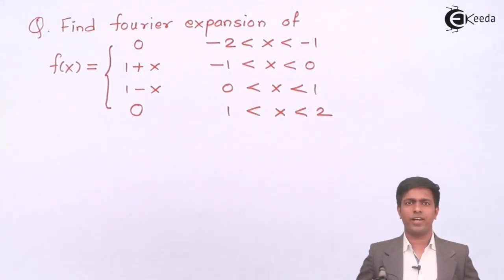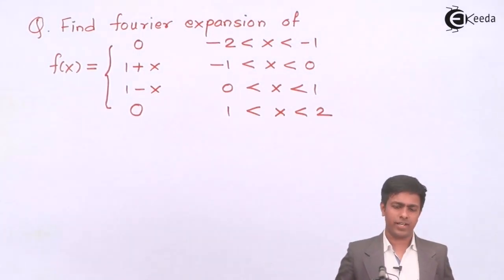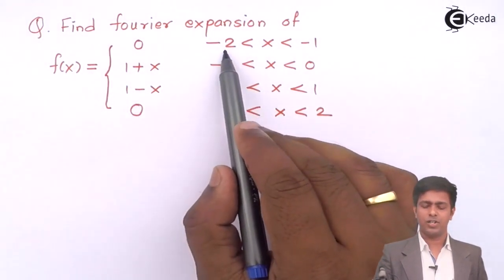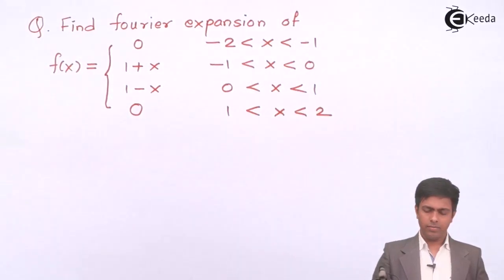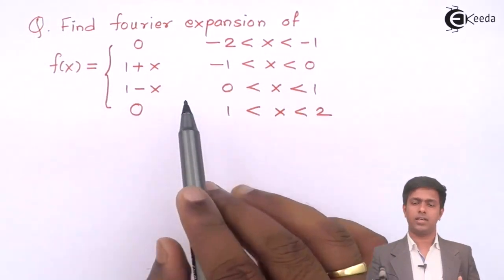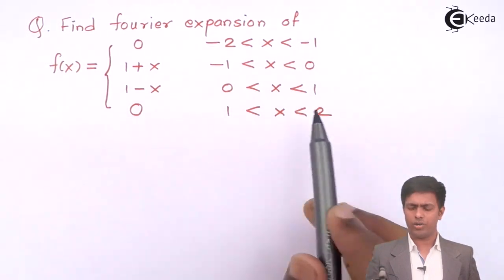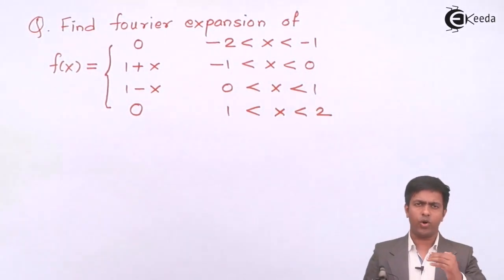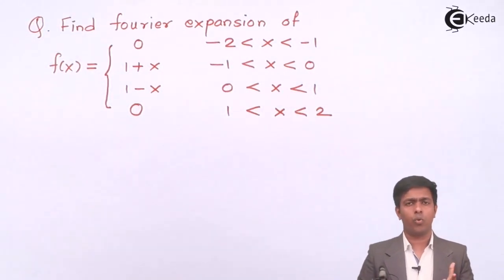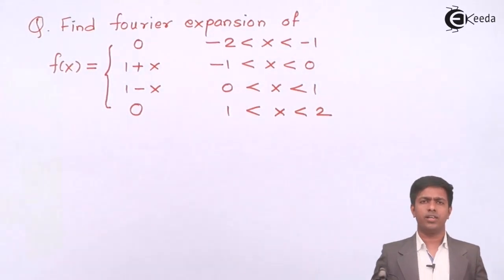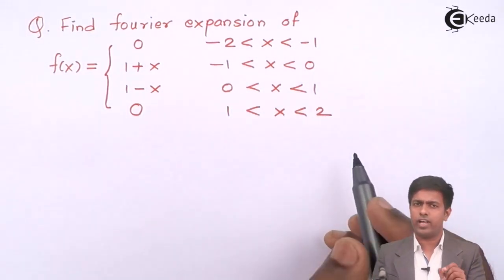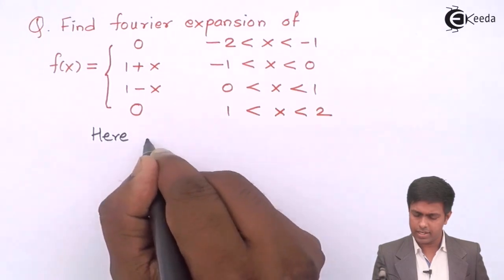We are going to find the Fourier expansion of f(x), where f(x) has four values: 0 on [-2, -1], (1+x) on [-1, 0], (1-x) on [0, 1], and 0 on [1, 2]. The overall range is -2 to +2, which is of the form -l to l, so l = 2.